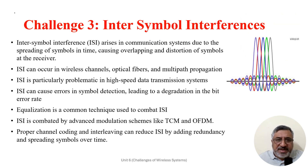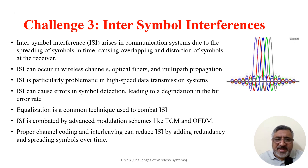Inter-symbol interference (ISI) is another challenge which arises in communication systems due to the spreading of a signal in time, causing overlapping and distortion of symbols at the receiver. ISI can occur in various types of channels, including wireless channels, optical fiber, and multipath propagation environments.